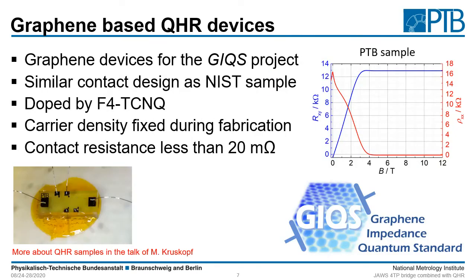At PTB we are also producing graphene based quantum hall devices and we are involved in the graphene impedance quantum standard project, which is a European metrology project. The contact design of our samples is quite similar to that of the NIST samples, but in contrast we dope the samples with F4-TCNQ, which means the carrier density will be fixed during fabrication. Looking at the overview plot, you can see that also for this sample the quantized state at DC is achieved at fields above 5 Tesla.